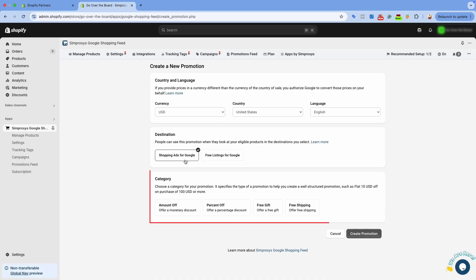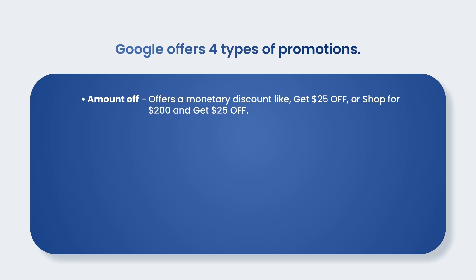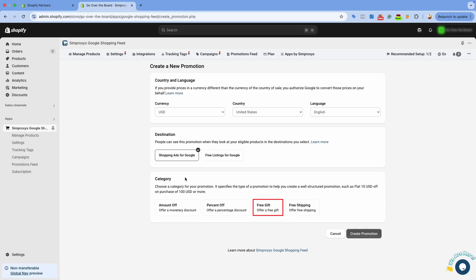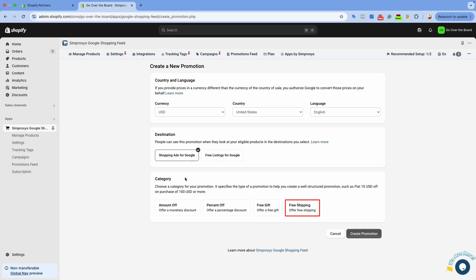Then select the promotion category. Google offers four types of promotions: Amount Off, which offers a monetary discount like 'Get $25 off' or 'Shop for $200 and get $25 off'; Percent Off, which offers a percentage discount like '20% off on all nail accessories'; Free Gift, which offers a free gift like 'Buy a smartphone and get wireless earbuds free'; and Free Shipping, which offers free shipping on products.